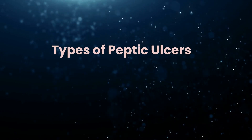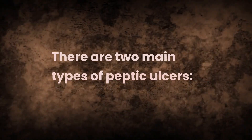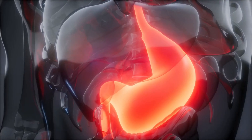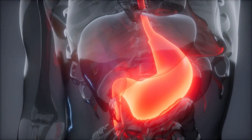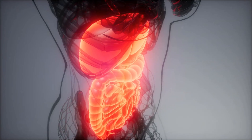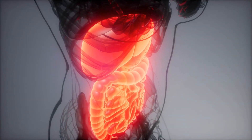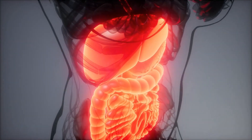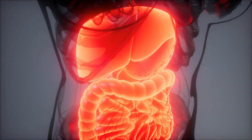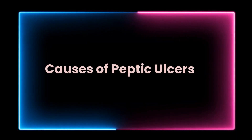There are two main types of peptic ulcers. First, gastric ulcers, which form on the lining of the stomach. Second, duodenal ulcers, which develop in the upper part of the small intestine called the duodenum.